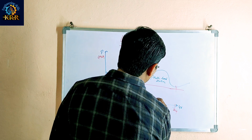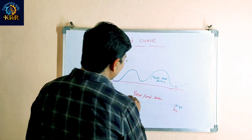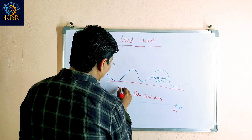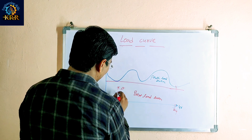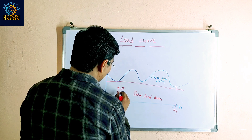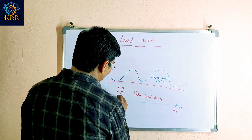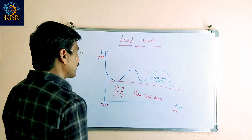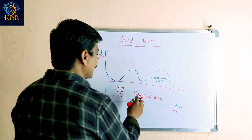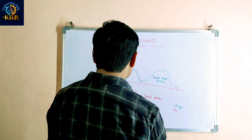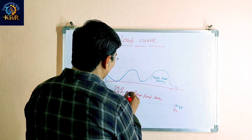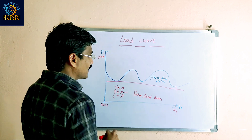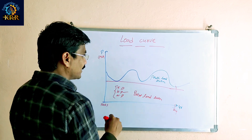For the base load area: thermal power plants, nuclear power plants, and large hydro power plants come under the base load. Big hydro plants only come under the base load.